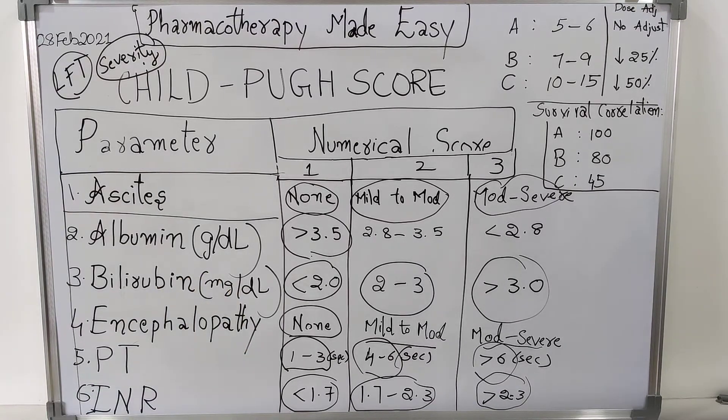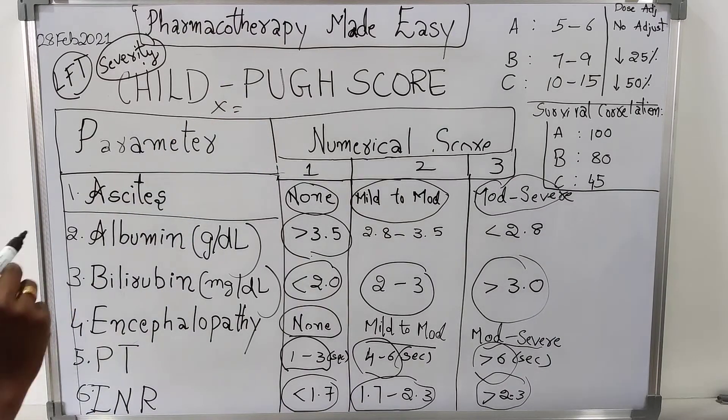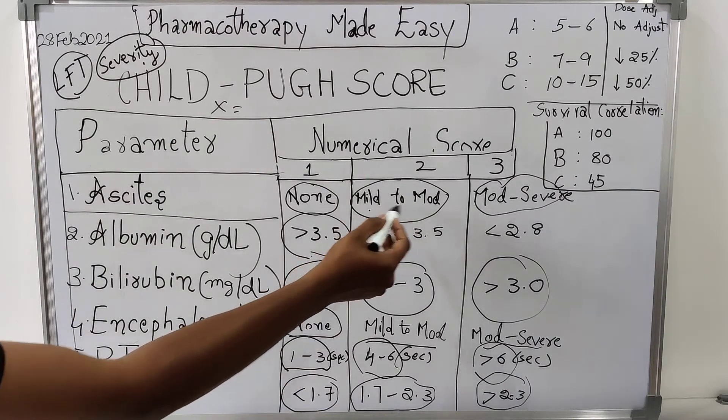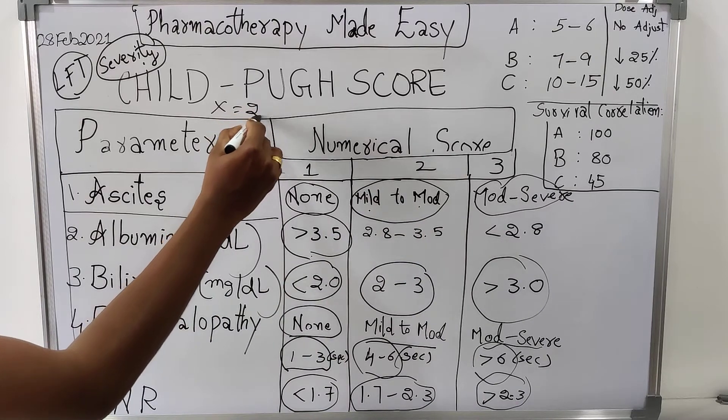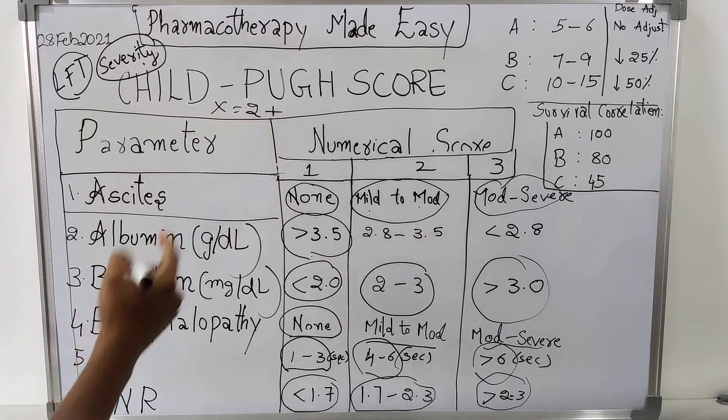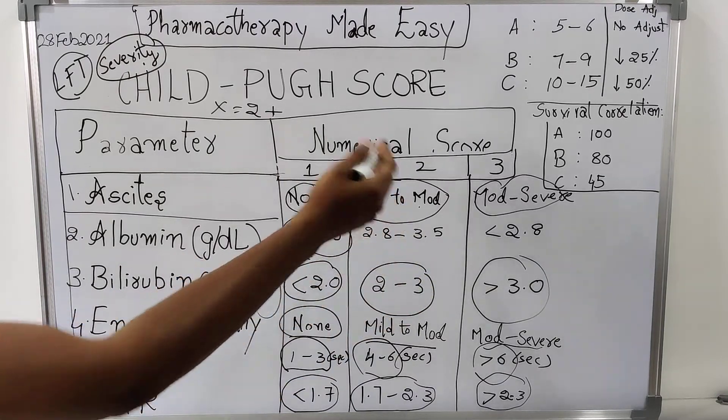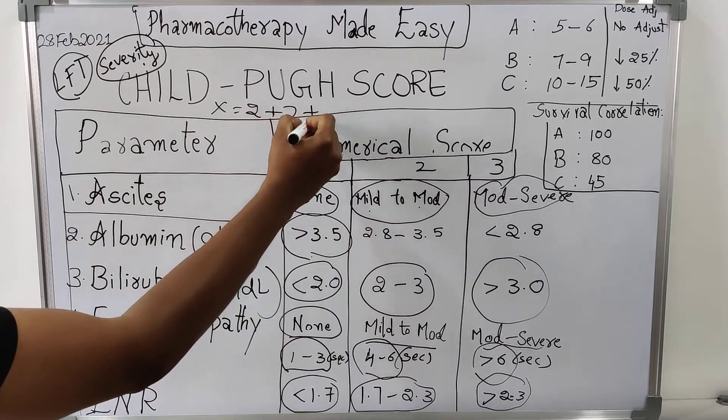How to calculate? Let us assume that patient X came to the hospital. He is having ascites of mild to moderate condition. Then score will be 2 for the first parameter. If albumin is in the range of 2.8 to 3.5, then again score will be 2.